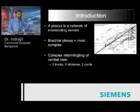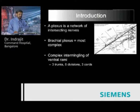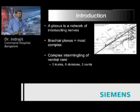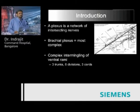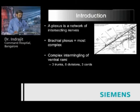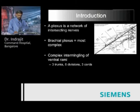Let me begin with just two slides on anatomy — not more, because this area is a little bit complex. A plexus, as defined, is a network of intersecting nerves. Among the plexi in the human body, the brachial plexus is the most complex. It has three trunks, six divisions, and three cords, as most of you are familiar with.